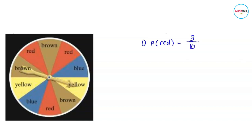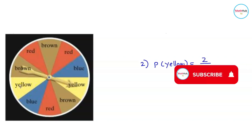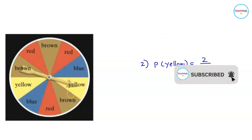Therefore, the probability of landing on a red region is 3 over 10. To get the probability of landing on a yellow region, we do the same thing. For the numerator, we count the number of yellow regions, which is equal to two. Divided by the total possible outcomes, that is equal to 10. The probability of landing on a yellow region is 2 over 10, which is equal to one-fifth.